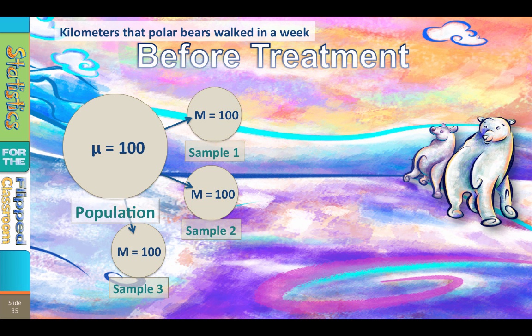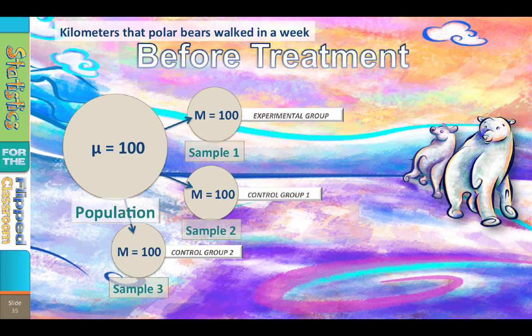The mean of the sample should be the same as the mean of the population from which it was drawn. Now we're going to assign the first group to be our experimental group and the next two groups to be control groups. In a real experiment, we would have no need for two control groups, but I'm doing this to illustrate changes due to chance and changes due to an effect.